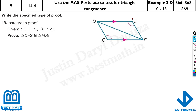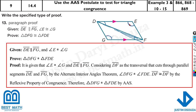And here, DE is parallel to FG — these two lines are parallel. If those two lines are parallel, we have many angle relationships. This gives us alternate angles. And this angle is given to us. And this is the reflexive side. So we can say it's AAS — because there are two angles and a side.